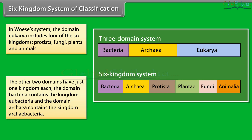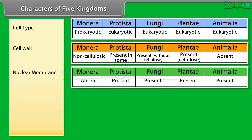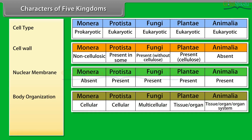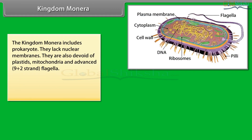The characters of the five kingdoms are based on: cell type, cell wall, nuclear membrane, body organization, and mode of nutrition. Kingdom Monera includes prokaryotes. They lack nuclear membranes and are also devoid of plastids, mitochondria, and advanced 9+2 strand flagella. Monera cells are microscopic and are typically unicellular organisms.